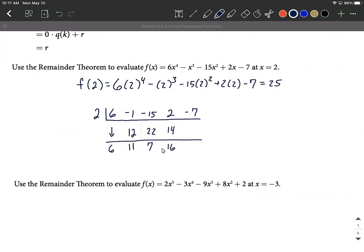Add 2 plus 14 makes 16. One more multiply, 2 times 16 makes 32. And finally, we add negative 7 plus 32 makes 25.